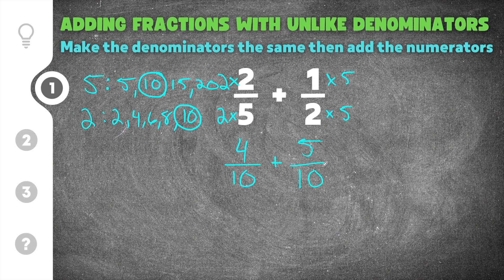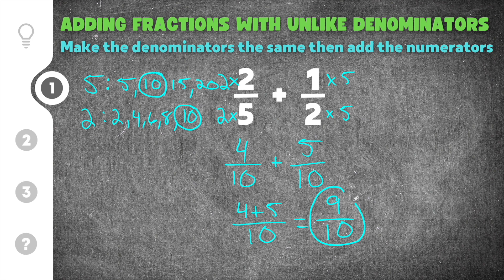Now that the denominators are equal we can add the numerators: 4 plus 5, keeping the denominator the same as 10. Four plus five is 9, so the denominator stays 10. Our final answer is nine tenths — two fifths plus one half equals nine tenths.